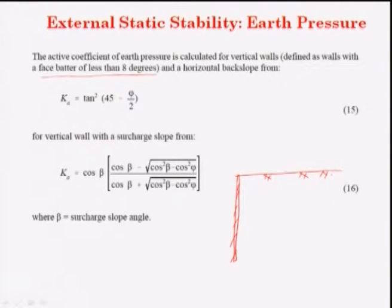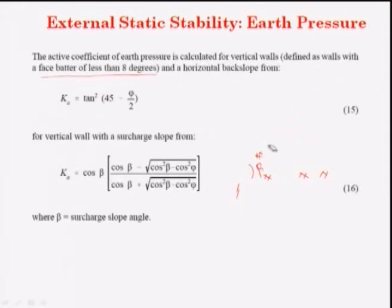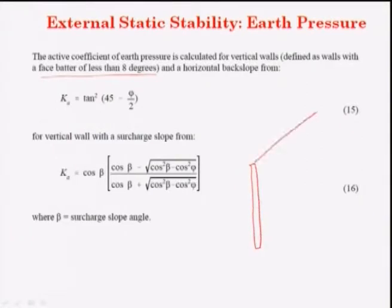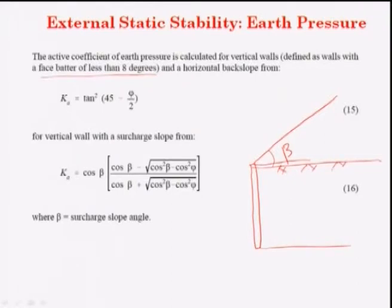If the backslope is inclined, the soil retained behind the back face of the wall is inclined — this is called an inclined backslope. For K_A, the active earth pressure coefficient: for a vertical wall with a horizontal backslope, K_A = tan²(45° − φ/2).